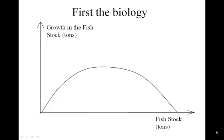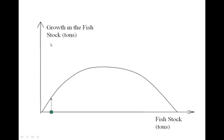We're going to start with a basic biological model — a very simple model that captures important features of an open access resource. On the horizontal axis we have the fish stock, that is how many fish are actually out there in the water. On the vertical axis we have growth in the fish, that is how fast the fishery is growing. Starting from some initial point, the stock grows each period, and with more fish there are more parents giving birth, so the growth rate actually increases.